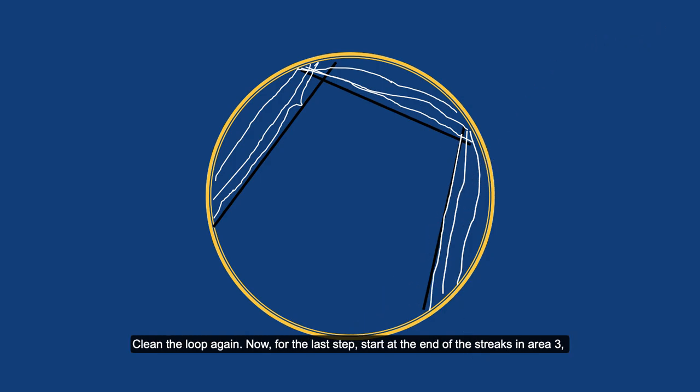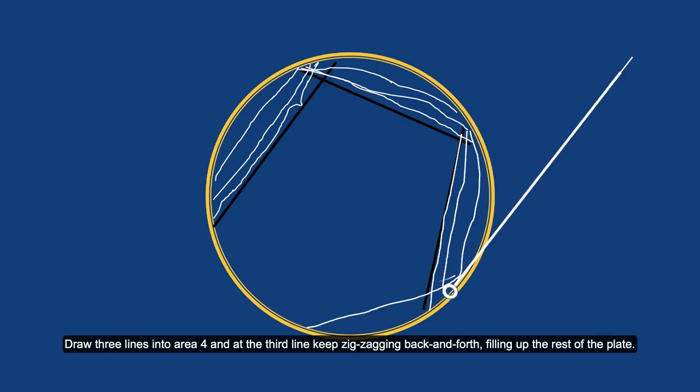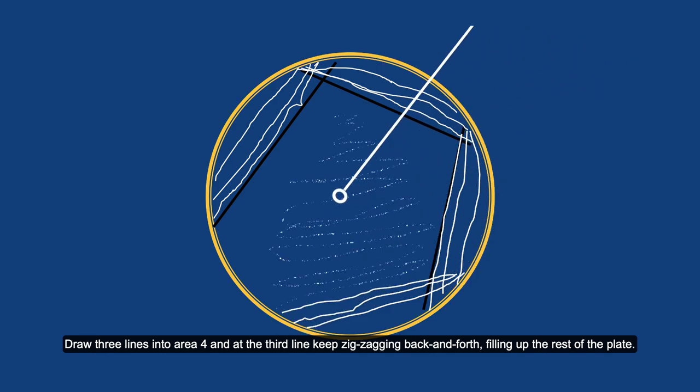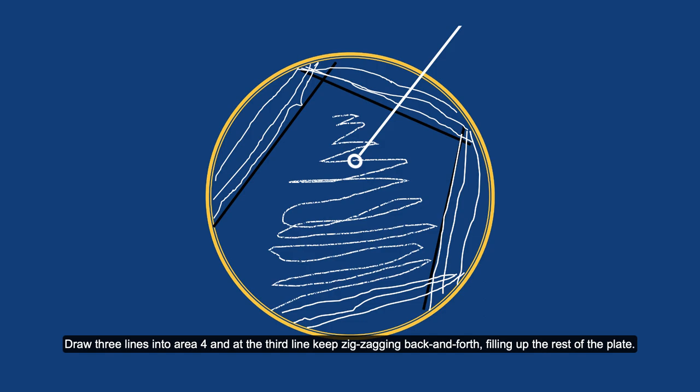Now, for the last step, start at the end of the streaks in area three, draw three lines into area four, and at the third line, keep zigzagging back and forth filling up the rest of the plate.